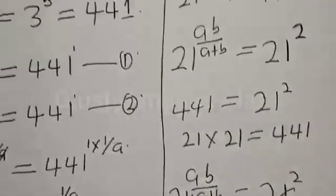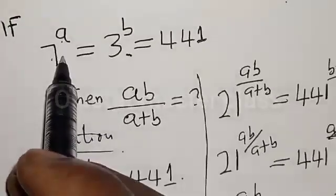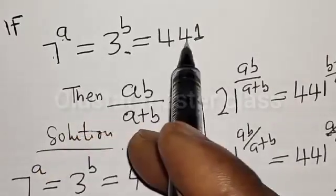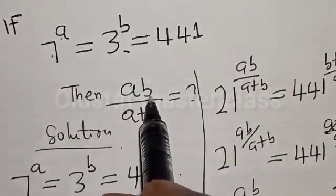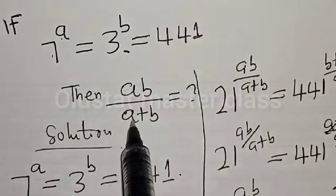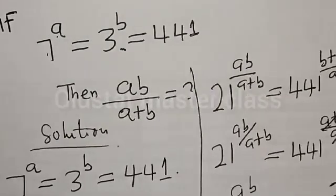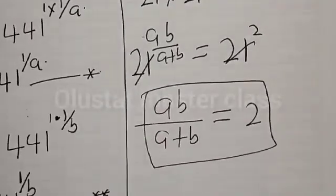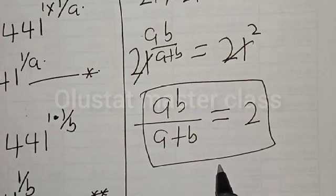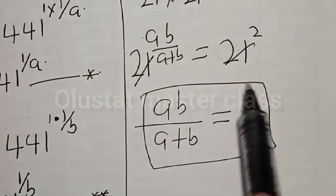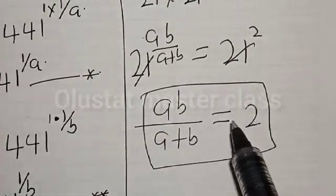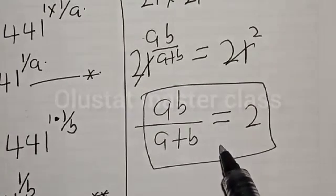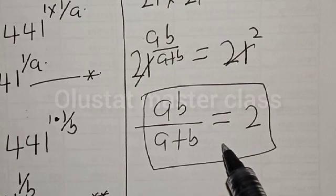And remember that the question is: if 7 raised to the power A is equal to 3 raised to the power B is equal to 441, then what is the value of AB divided by A plus B? And we have gotten the value of AB divided by A plus B to be equal to 2. If you have enjoyed the class, please don't forget to like, share, comment and subscribe. If you have a better or shorter method, kindly let us know. Thank you.